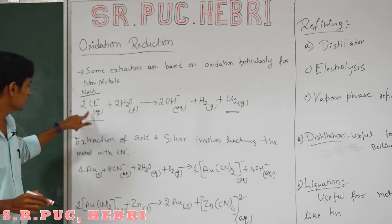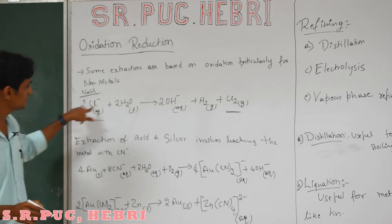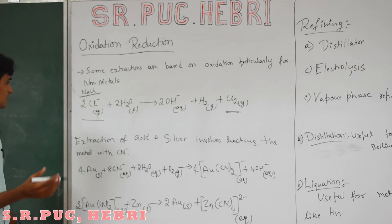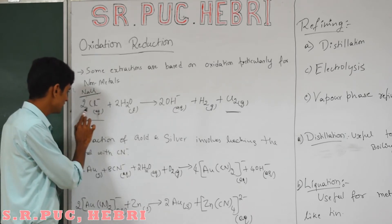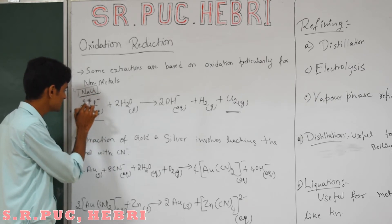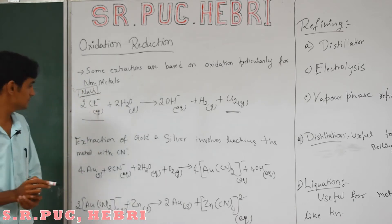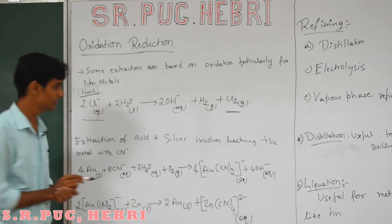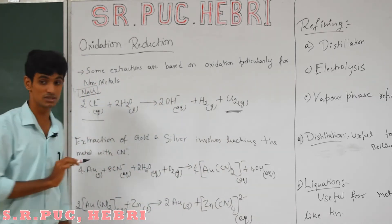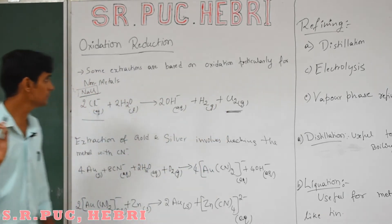In your NCERT textbook they have written only Cl⁻, so I consider that here. Of course there is no problem if you write NaCl, but you should also mention NaOH - that is the only difference. So from NaCl we have Na⁺ and Cl⁻. During electrolysis, this Cl⁻ ion will be converted into Cl₂. That is what is called oxidation - this is one example of the oxidation method.